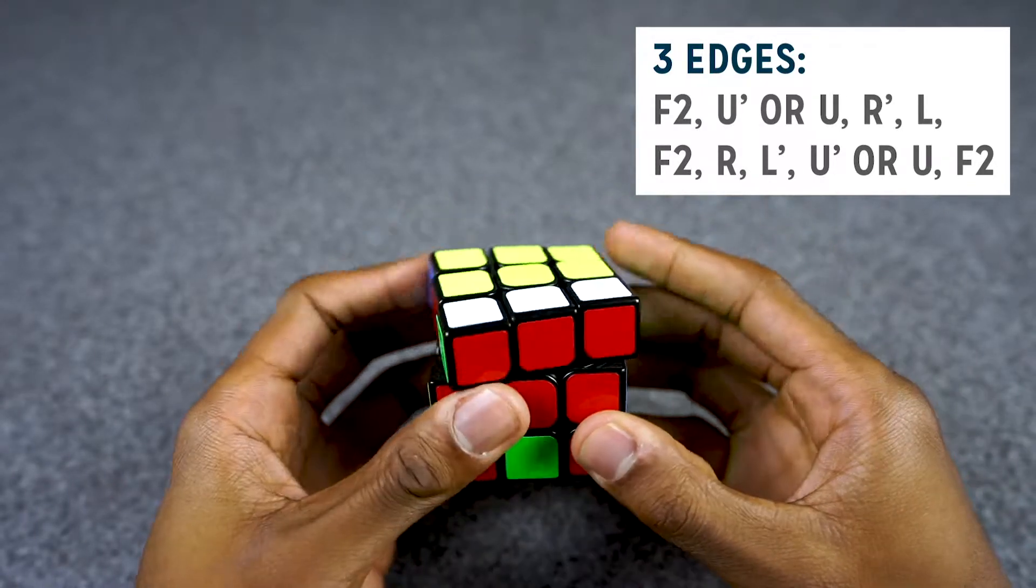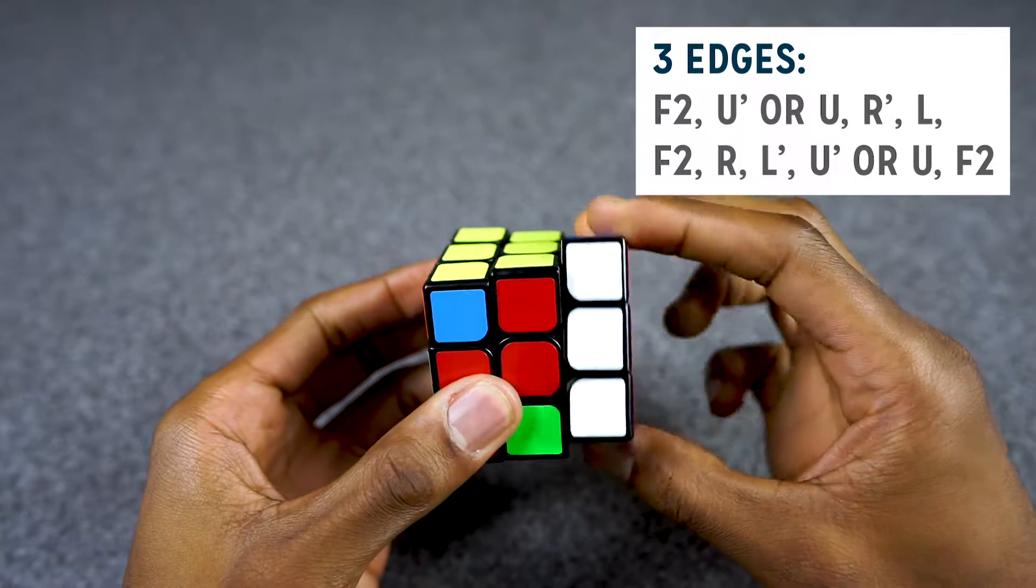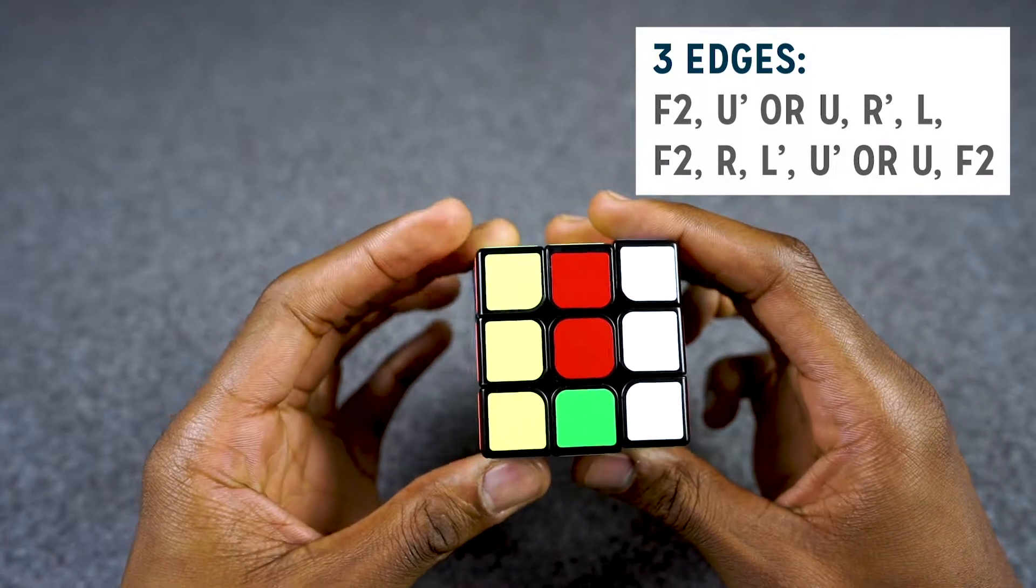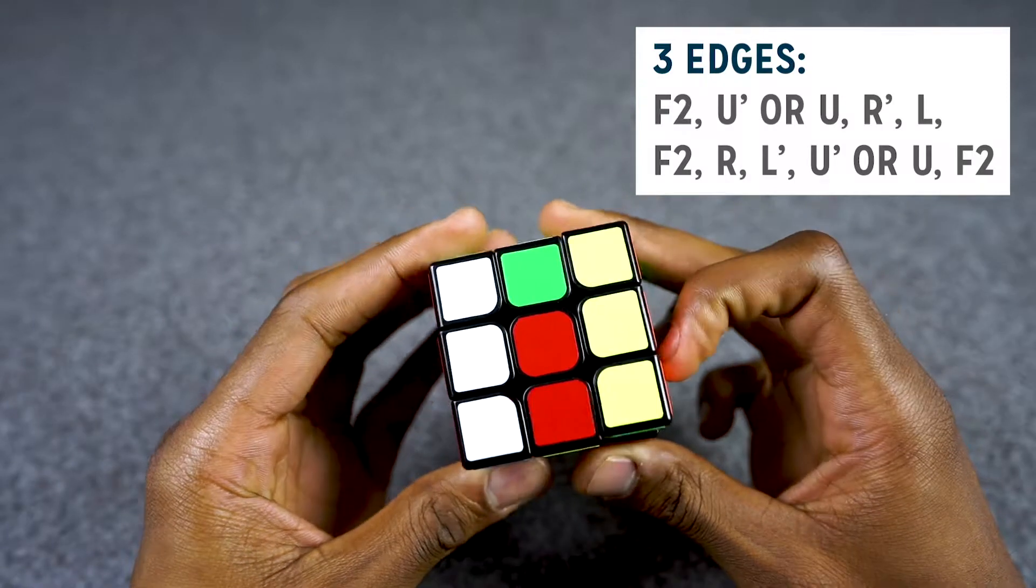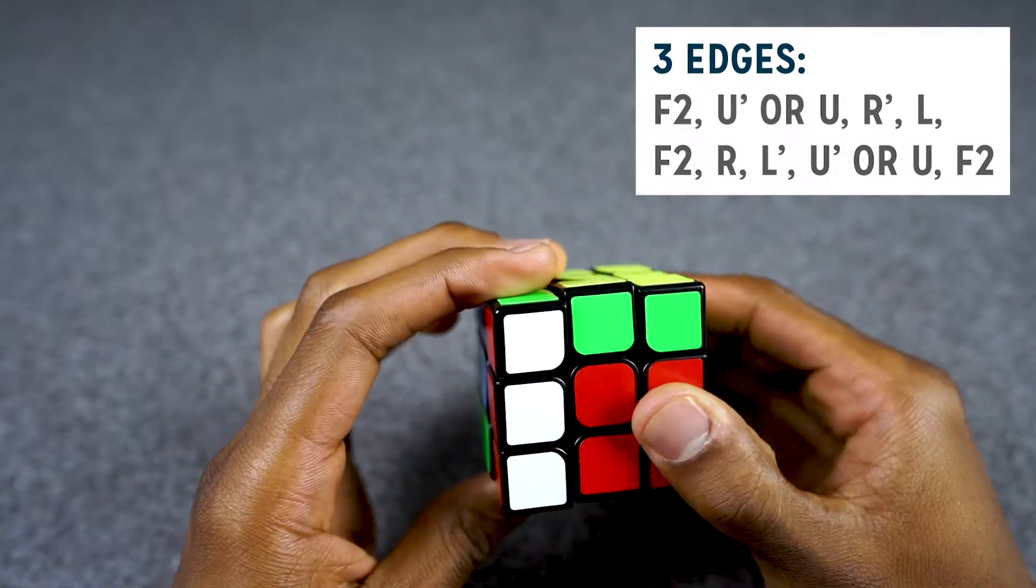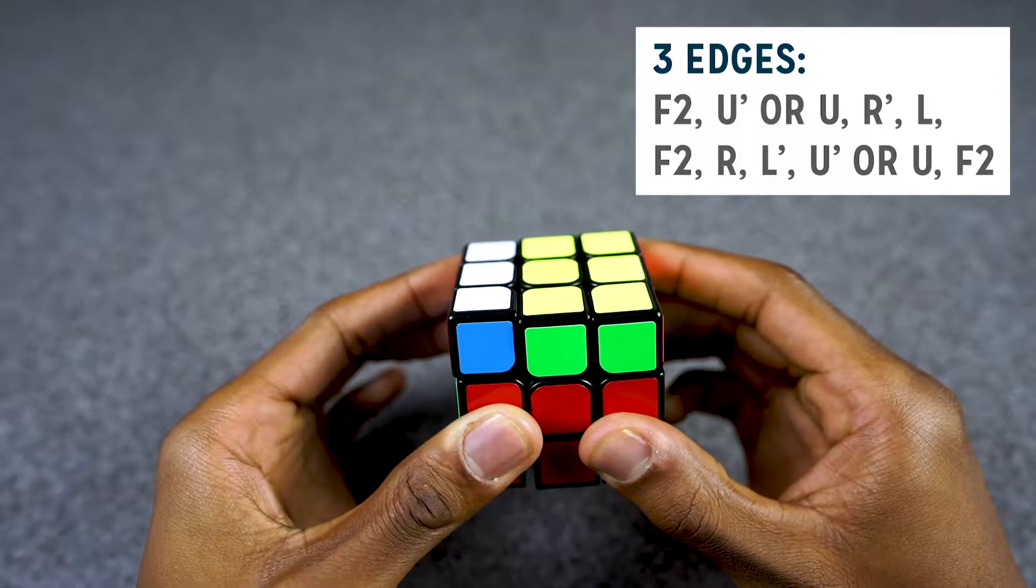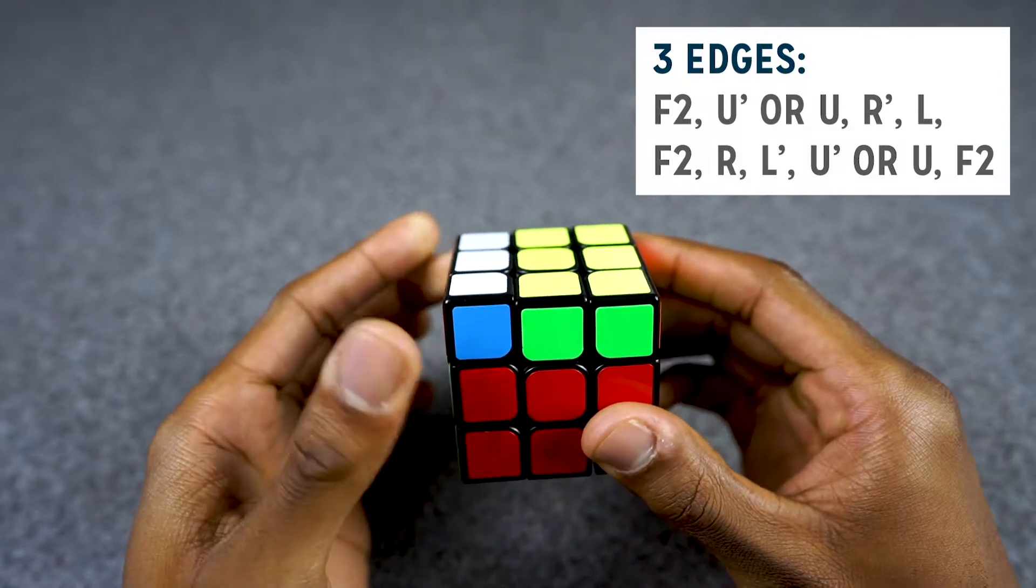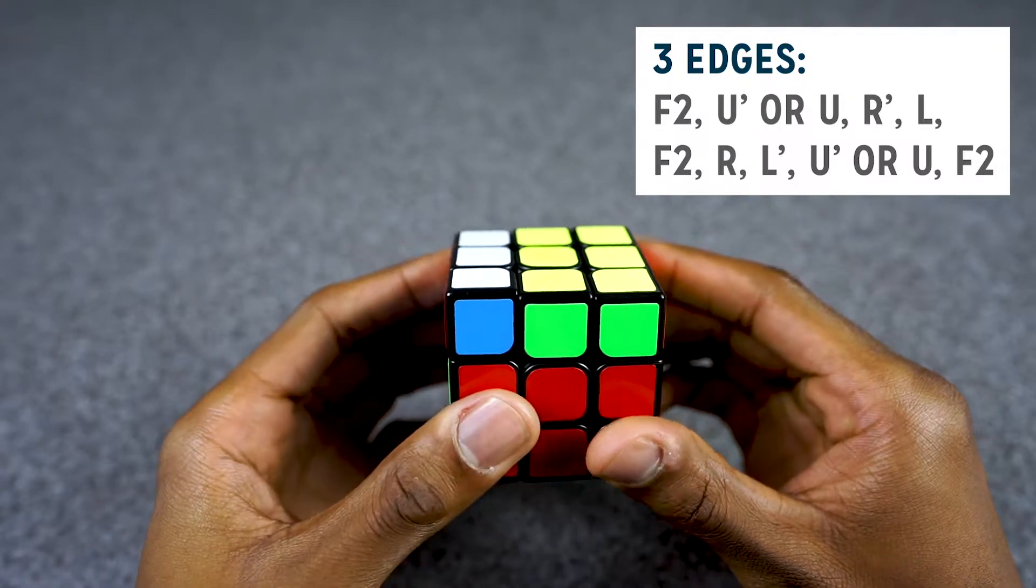So it's going to be F2, U prime, R prime, L, F2, R, L prime. How we finish is based on the next step, which is going to be based on how we started. We started with a U prime, so this is actually going to be a U prime.